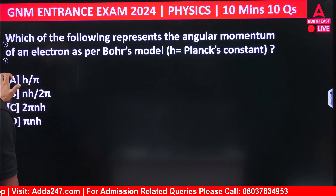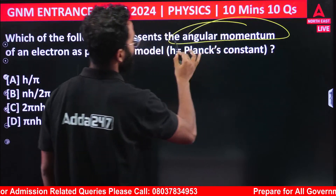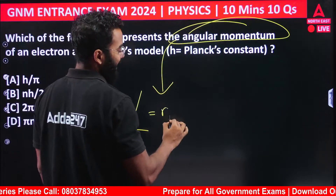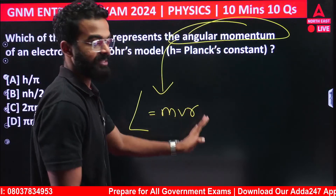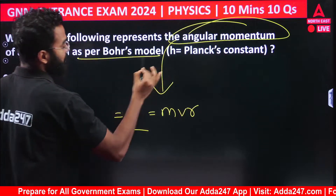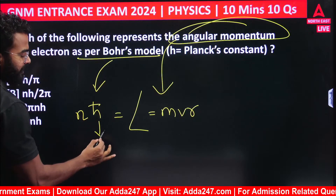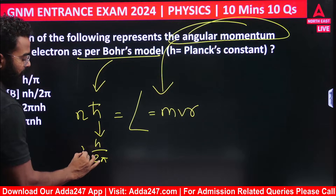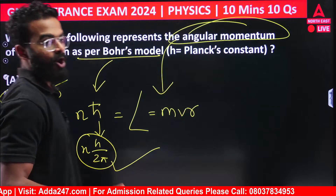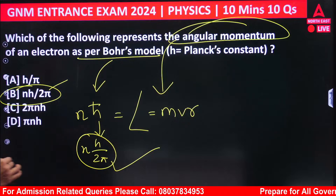Next question: which of the following represents angular momentum? Angular momentum is represented by capital L, and is equal to mass × velocity × radius (MVR). As per Bohr's model, it equals nH/2π. So option B, nH/2π, will be the correct answer.